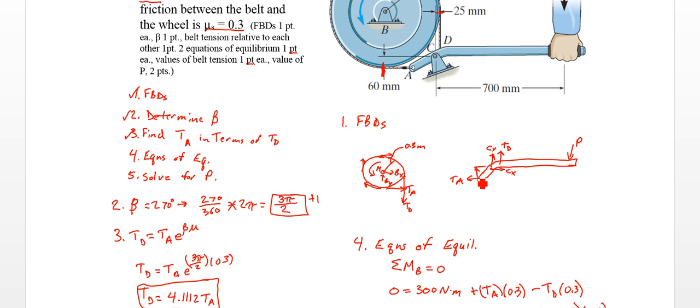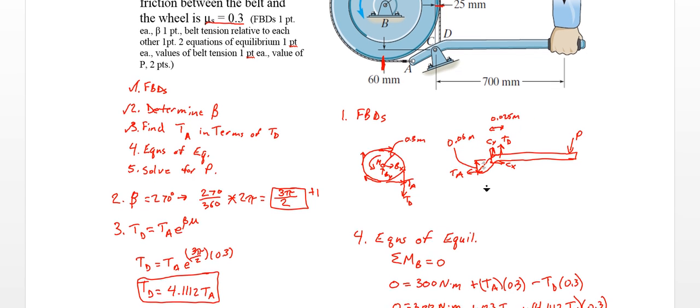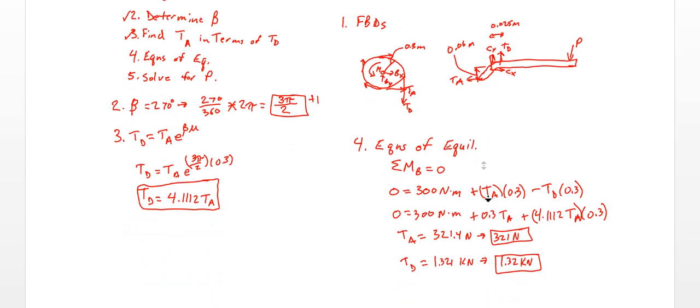So I should have maybe added that dimension here. So this dimension in my free body diagram, that's 0.06 meters. This point to this, let's see there to there, that's going to be 0.025 meters.